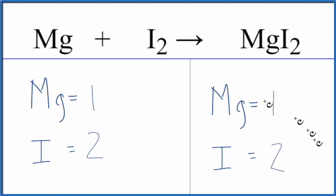And you can see that this equation is balanced. We have the same number of each type of atom on both sides, so we're done.